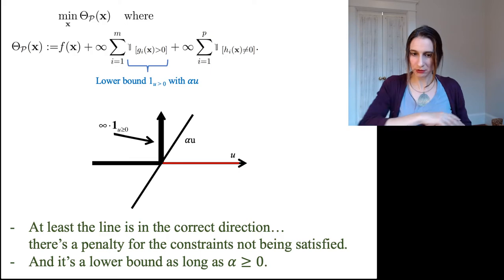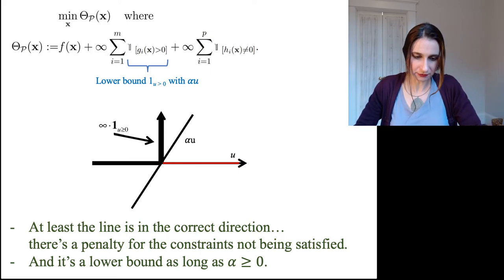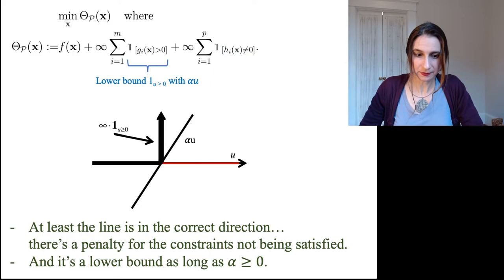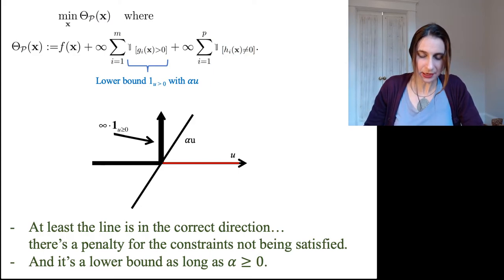It's infinite all the whole area there is infinite. And I'm going to lower bound this function by a line. And that line has slope alpha.